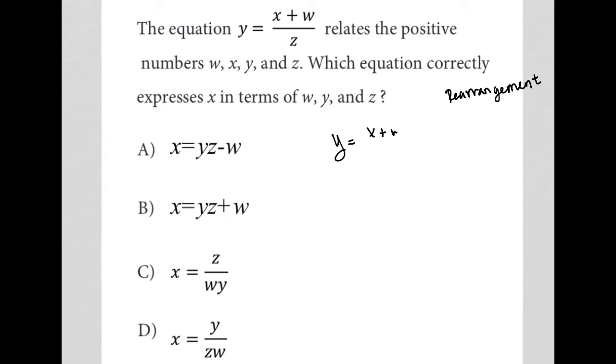So y equals x plus w over z. And I want to rearrange this so that I have x equals, so that I isolate the x. So how do I isolate x in this equation as given to me?